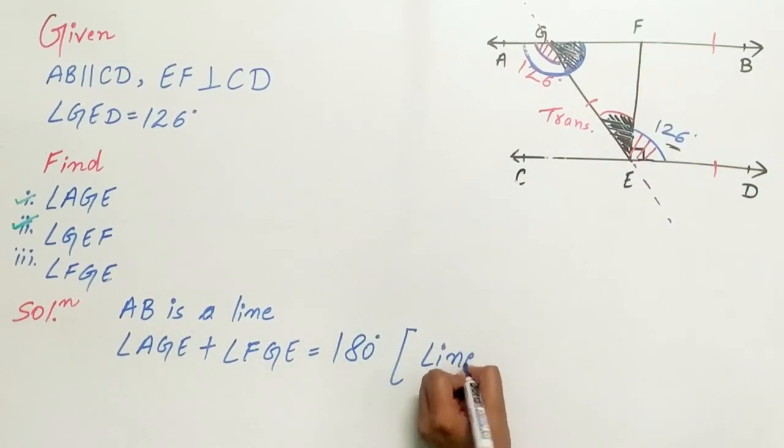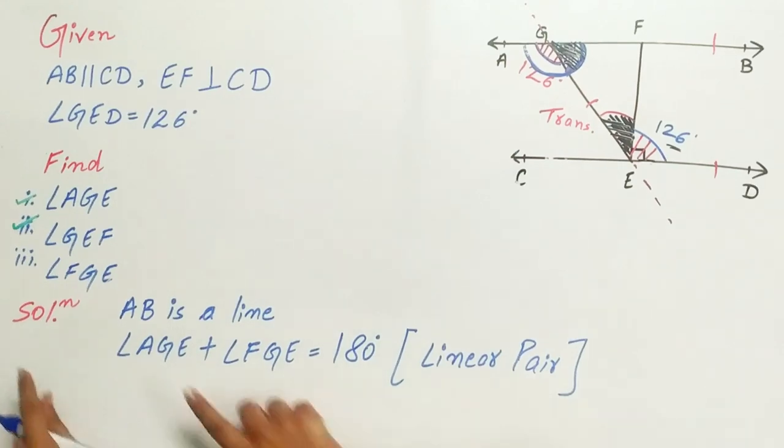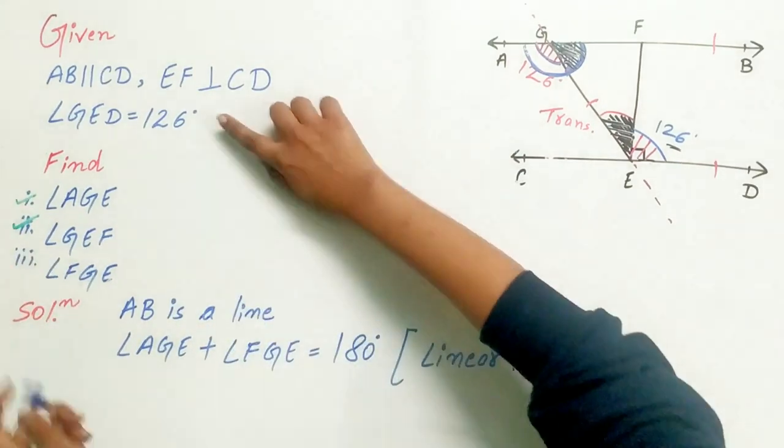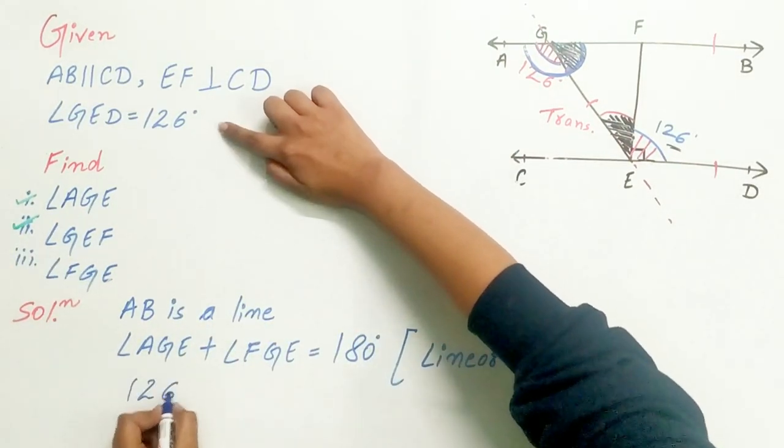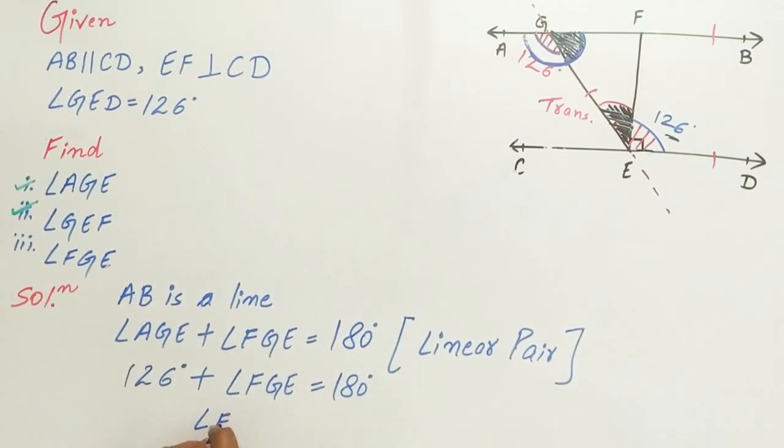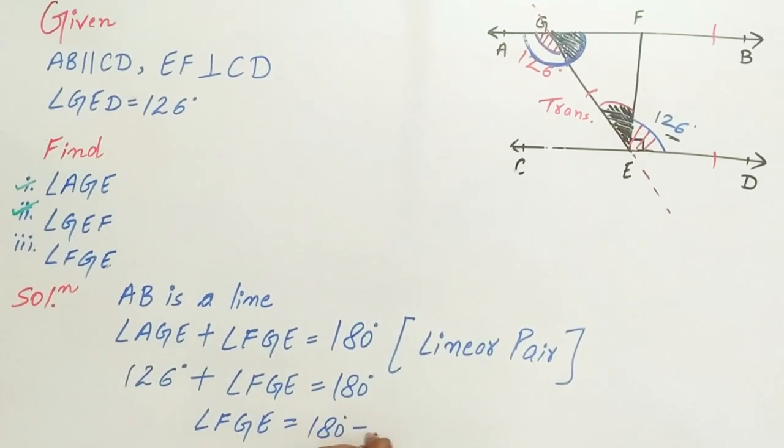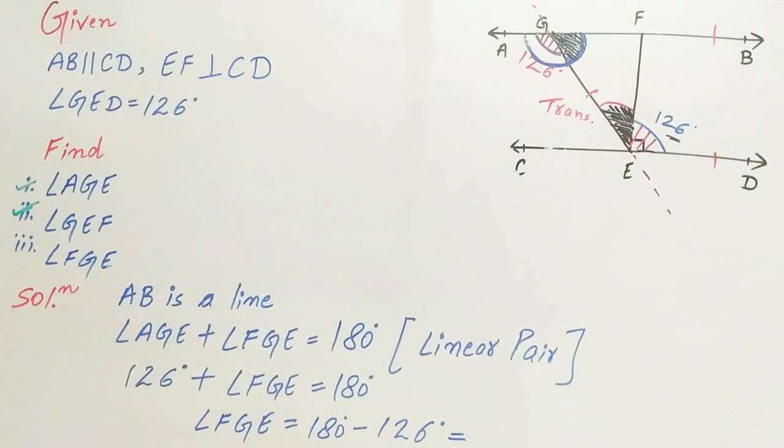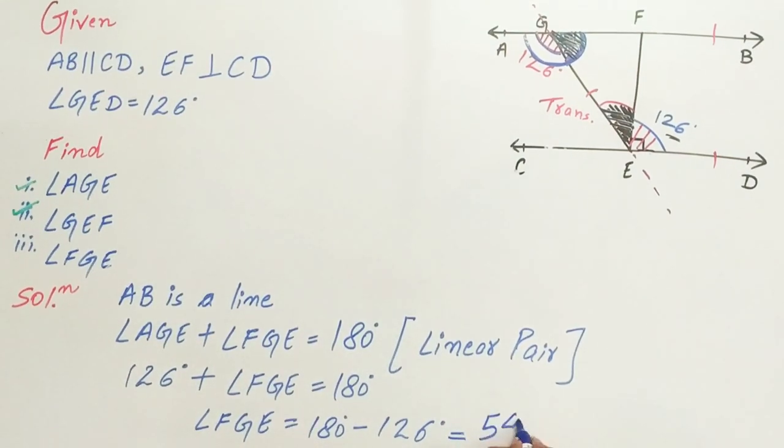Because of linear pair. Angle AGE is 126 degrees plus angle FGE equals 180 degrees. So angle FGE equals 180 degrees minus 126 degrees, which is 54 degrees. Exactly.